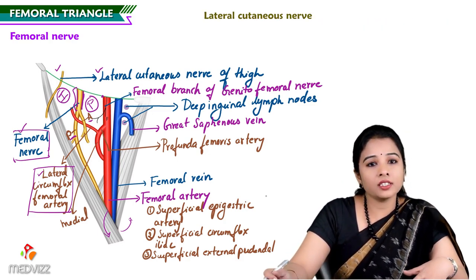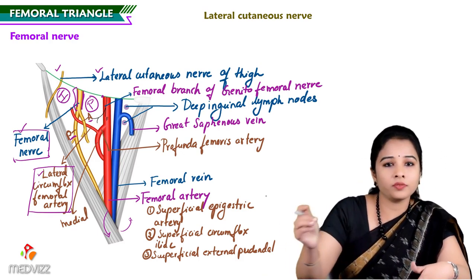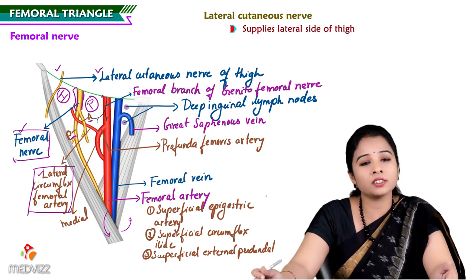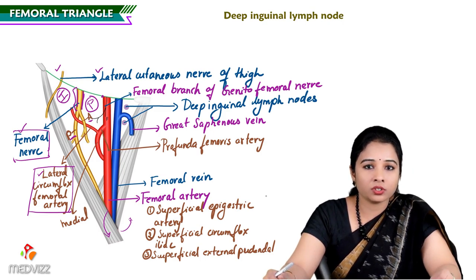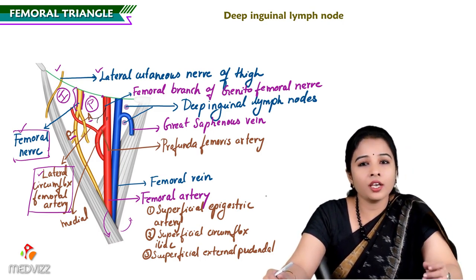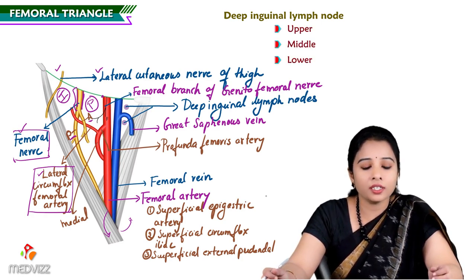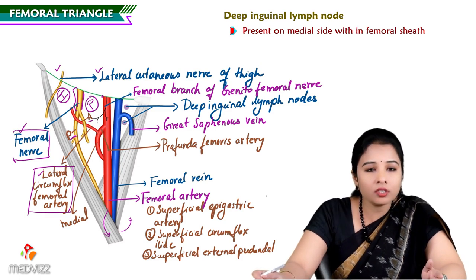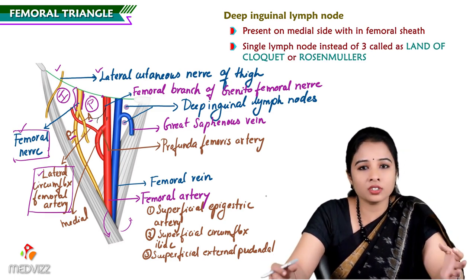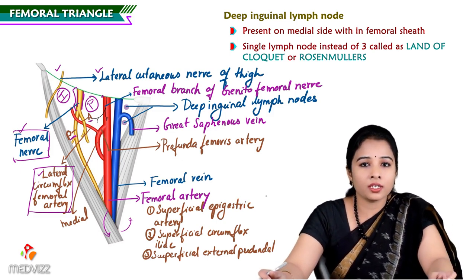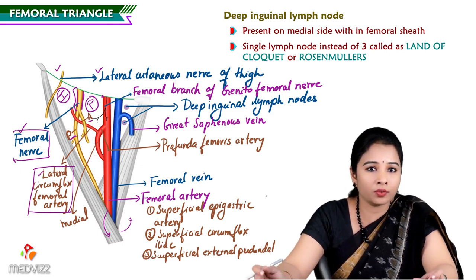The lateral cutaneous nerve of the thigh is the most laterally positioned structure, supplying the lateral side of the thigh. The deep inguinal lymph nodes are usually three in number — upper, middle, and lower — present on the medial side within the femoral sheath. Sometimes only a single lymph node is found, in which case it is called the gland of Cloquet or Rosenmuller's deep inguinal lymph node.